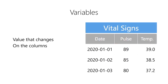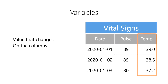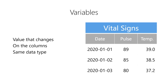For example, imagine we're recording the vital signs for a patient at a hospital. Our variables might be the date and time of the observation, the patient's heart rate measured by their pulse, and their body temperature at the time of the observation. What is most important is that all of the elements in a specific column must be of the same data type, scale, and unit of measure.